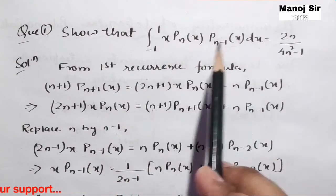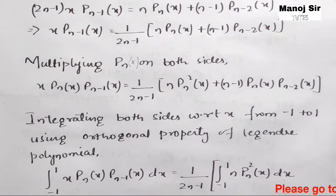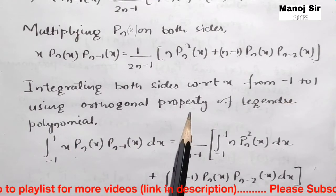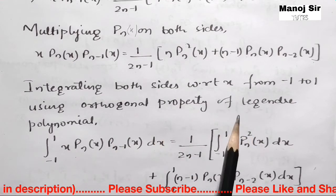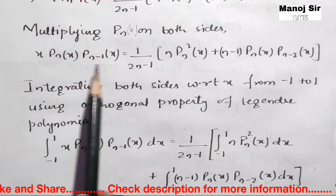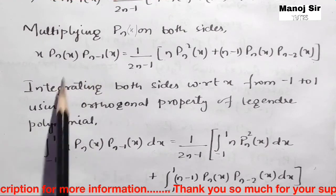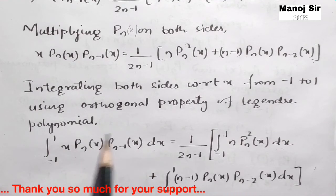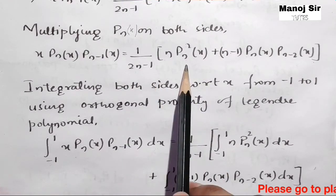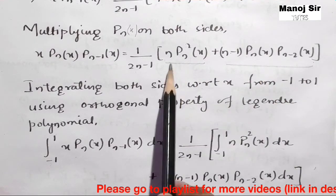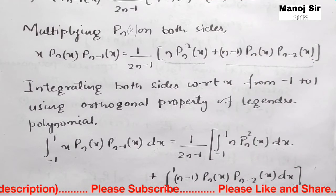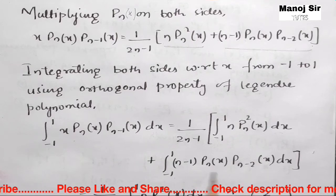Now we integrate both sides with respect to x, with limits from minus one to plus one. On the right side, 1/(2n−1) is a constant. We split into two terms: first term integrates n·Pₙ²(x), and the second term integrates (n−1)·Pₙ(x)·Pₙ₋₂(x), both from minus one to plus one.